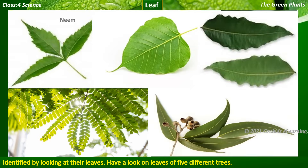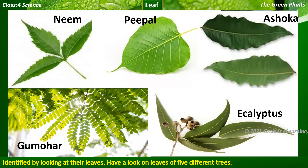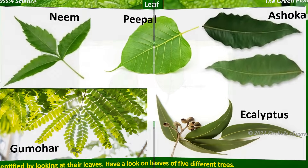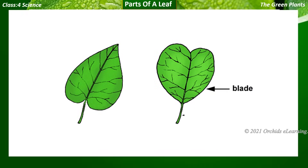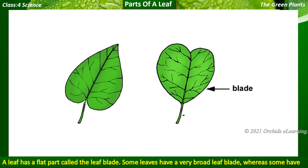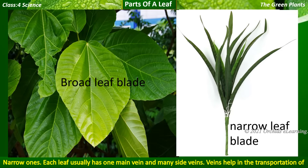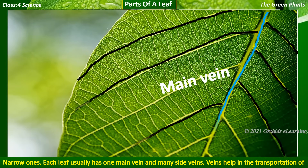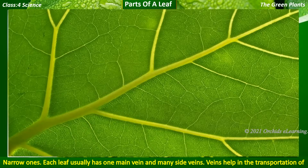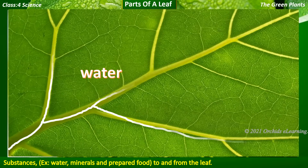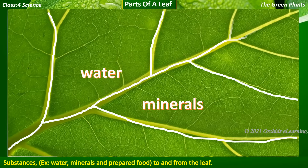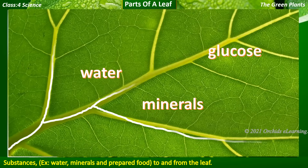Have a look at the leaves of five different trees. Parts of a leaf: a leaf has a flat part called the leaf blade. Some leaves have a very broad leaf blade whereas some have narrow ones. Each leaf usually has one main vein and many side veins. Veins help in the transportation of substances — for example, water, minerals, and prepared food — to and from the leaf.